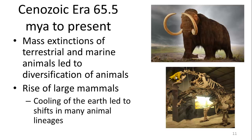In the Cenozoic era, mass extinctions of dinosaurs and marine animals led to a diversification of other animals, including the rise of large mammals such as the mastodon and giant sloths, which once roamed North, Central, and South America. A cooling period also led to many shifts in animal lineages.